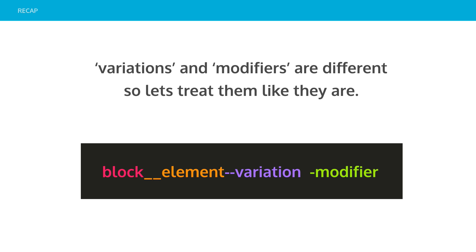To recap: variations and modifiers are completely different, so let's treat them like they are. Block Element Variation and Modifier is what we found really works for us. In the end we only had one or two variations once we took this approach — we realized we don't extend anything anymore, we just use chainable modifiers, and it's allowed us to clean up our UI library a lot. You could really just ditch variations if you didn't want them.